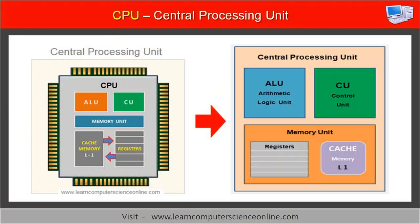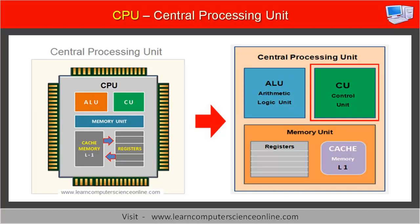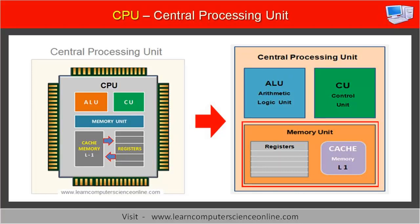Let us now discuss the CPU internal architecture. The CPU internally consists of three main units: first, arithmetic logic unit; second, control unit; and third, memory unit.